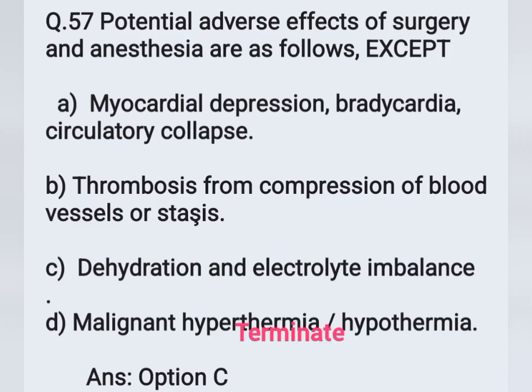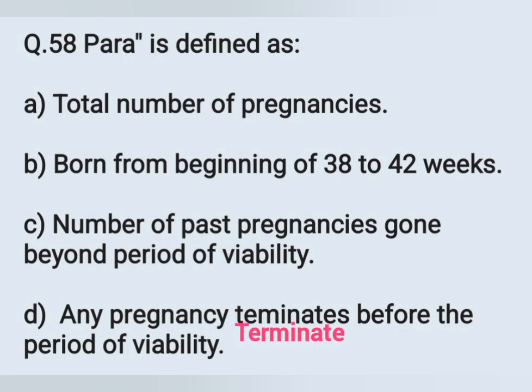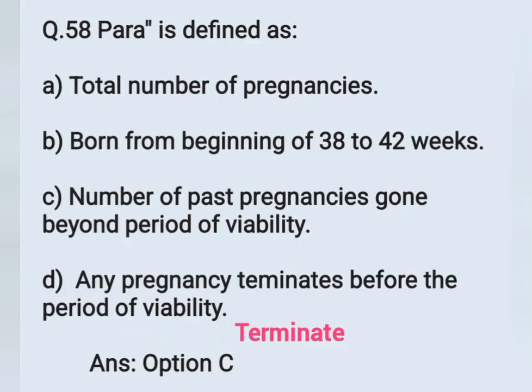Question number 58. Para is defined as — Option A: Total number of pregnancies. Option B: Born from beginning of 38 to 42 weeks. Option C: Number of past pregnancies gone beyond the period of viability. Option D: Any pregnancy terminated before the period of viability. The term para means number of past pregnancies gone beyond the period of viability — Option C is the correct answer.